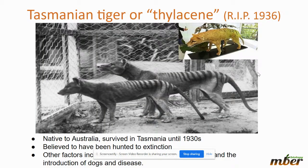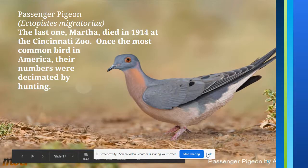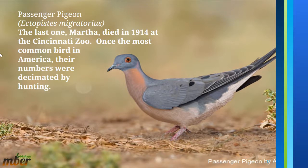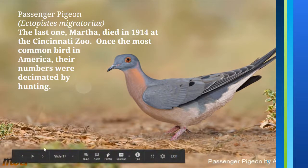The Tasmanian tiger went extinct in 1936. It was native to Australia and lived in Tasmania until the 1930s, and is believed to have been hunted to extinction. The Passenger Pigeon — the last one, named Martha, died in 1914 at the Cincinnati Zoo. It was one of the most common birds in America until decimated by hunting.